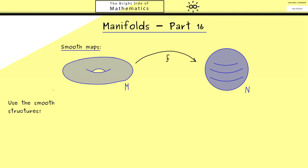Therefore, the question of today is: how are we still able to define the notion differentiable map between manifolds? And indeed, the quick answer for this question is that we can simply use the smooth structures we have on both sides.